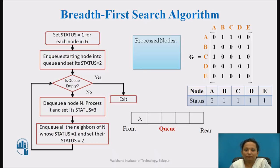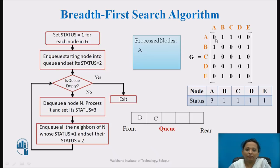Now we check: is the queue empty? No, the queue has node A. So we dequeue node A, mark it as visited, and change its status to 3. We then enqueue all neighboring nodes of node A. From the adjacency matrix, wherever we find value 1, that gives us B and C. These nodes are enqueued into the queue and their status is updated to 2.